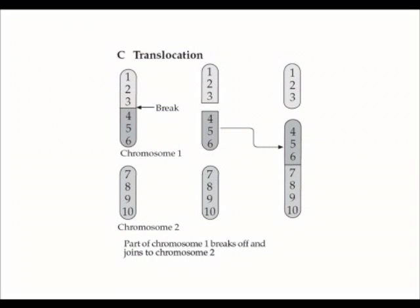Translocation happens when that broken piece of chromosome, you can see there in the dark gray, 4, 5, and 6, actually translocates. It moves locations and joins on to chromosome number 2. What you end up having is a really short chromosome number 1, that's just 1, 2, 3 now instead of 1, 2, 3, 4, 5, 6, and a much longer chromosome number 2.